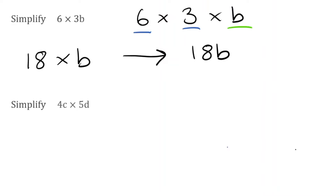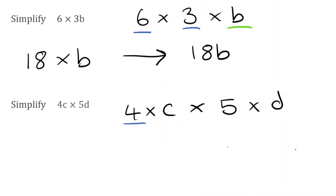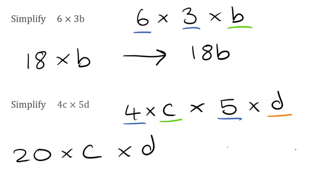For the next question, we have 4c multiplied by 5d. Writing this out in full, 4c means 4 multiplied by c, and 5d means 5 multiplied by d. Taking our number terms, we have 4 multiplied by 5, which is 20. Then we're multiplying by our term c, and finally by our term d. There's nothing else we can do, so we hide those multiplication signs. The final answer would be 20cd.